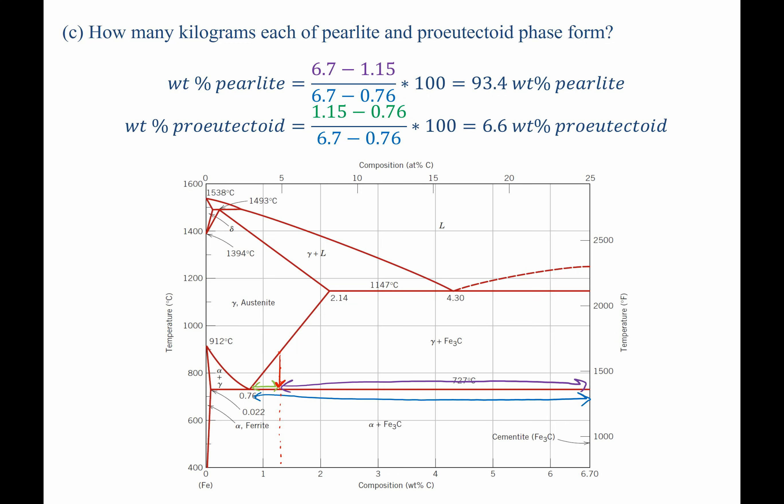The weight percent pearlite, and again, pearlite is everything that used to be austenite that's going to get transformed into a mixture of ferrite and cementite. That's going to be the purple length of the line divided by the blue length of the line. Meanwhile, the amount of pro-eutectoid phase that forms will be the green length divided by the blue length. And this has to be everything which was cementite prior to the eutectoid reaction.